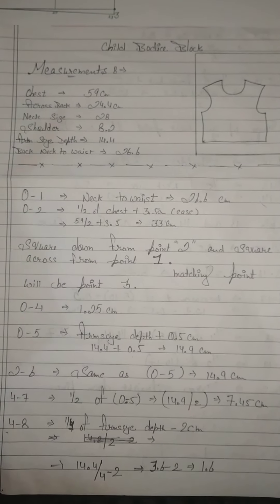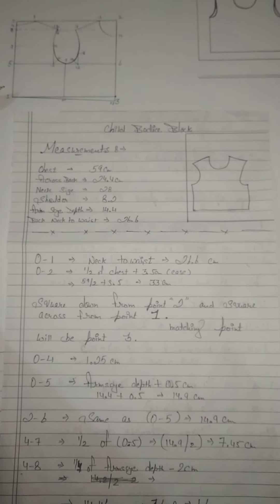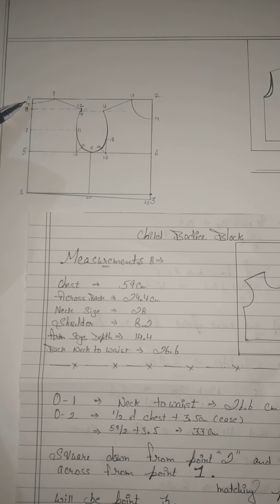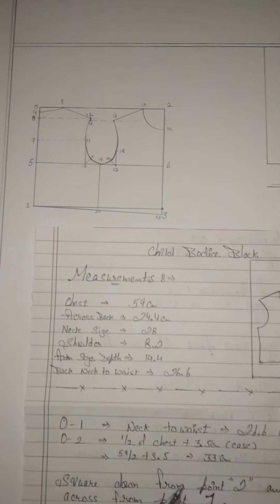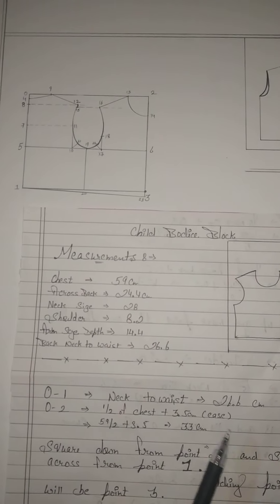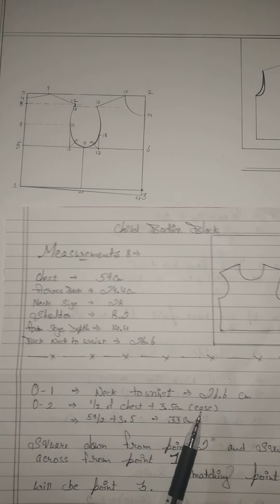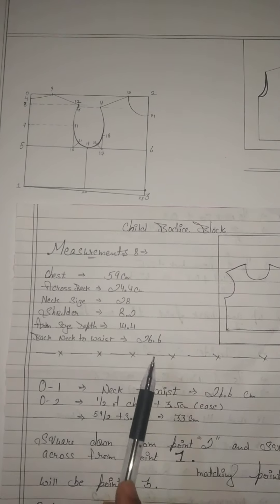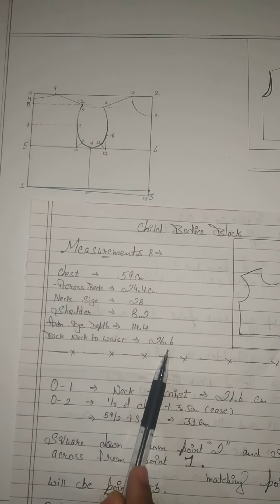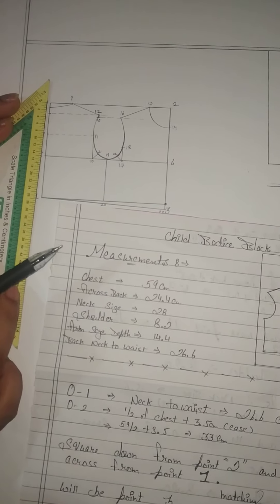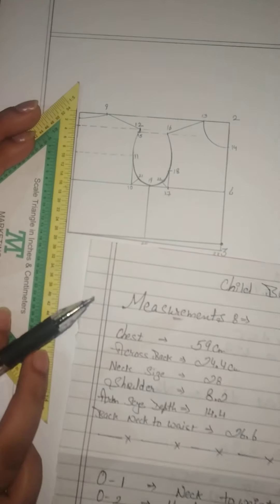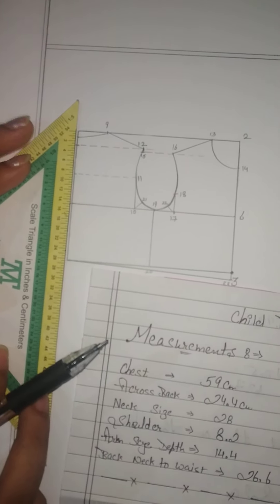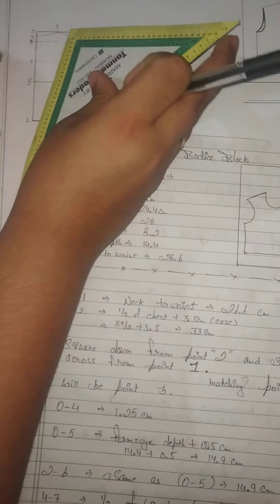Your first step is to draw a straight line. After drawing the straight line, mark the starting point. Point 0 to 1 is your neck to waist measurement — without doing any calculation, directly mark the neck to waist measurement that is 26.6 cm, which is already given in your measurements. With the help of your 1/4th scale, directly mark 26.6 cm. After marking 0 to 1, what do you have to do next?